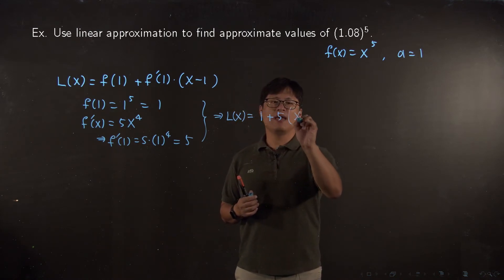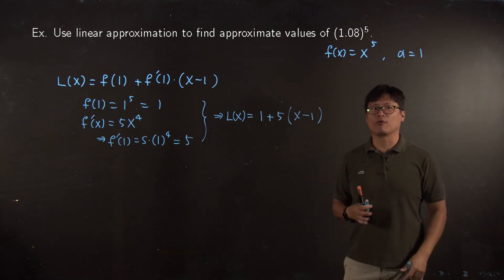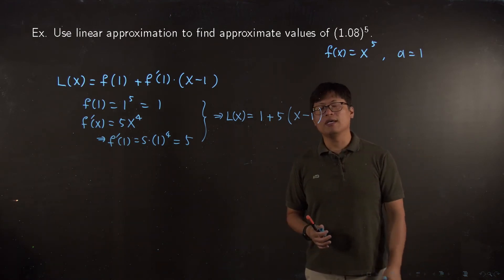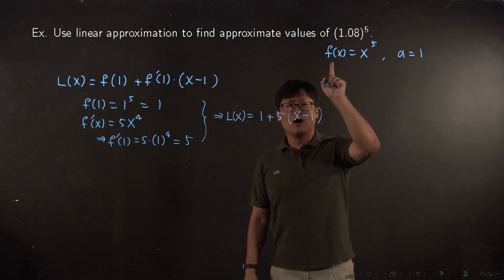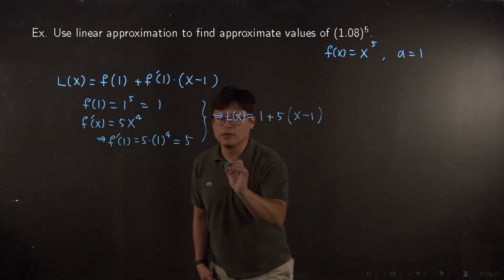Now we are ready. Then we can update my linear approximation L(x) as 1 plus 5 times (x minus 1). That's it. We don't have to make it as slow-paced and intensive, and this is perfect.